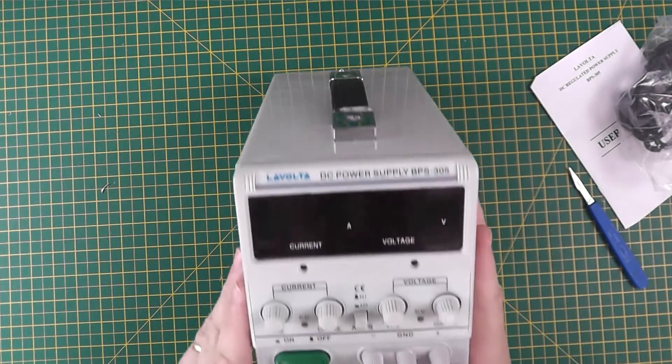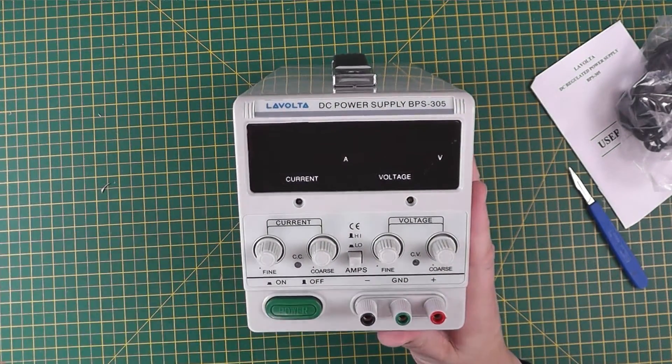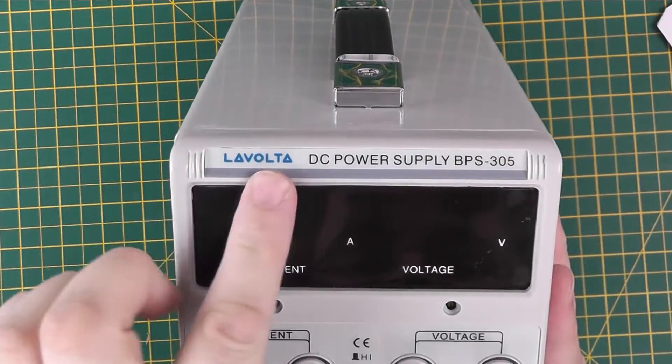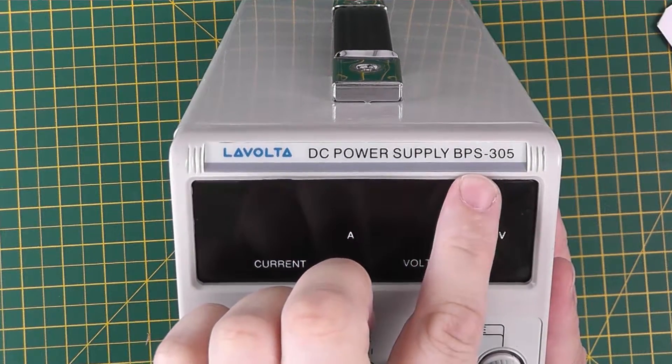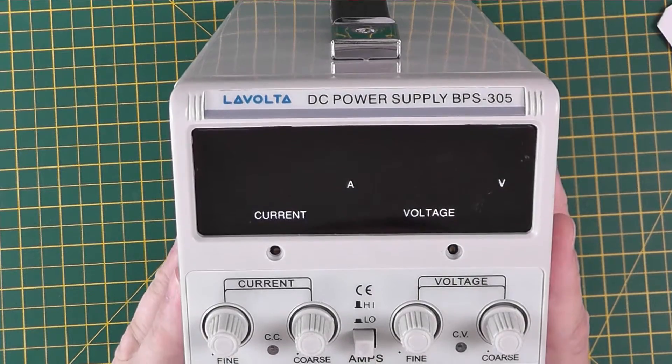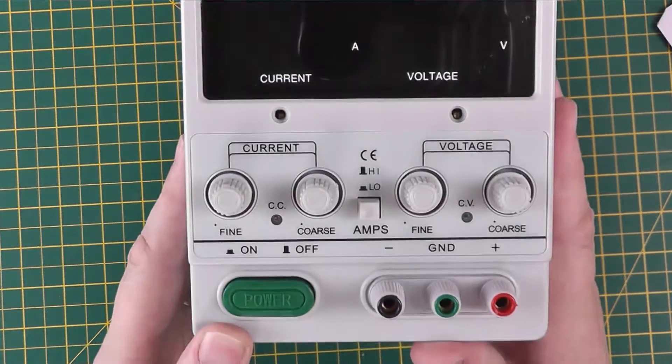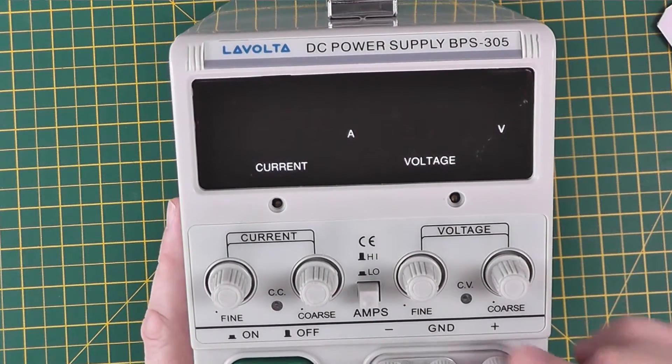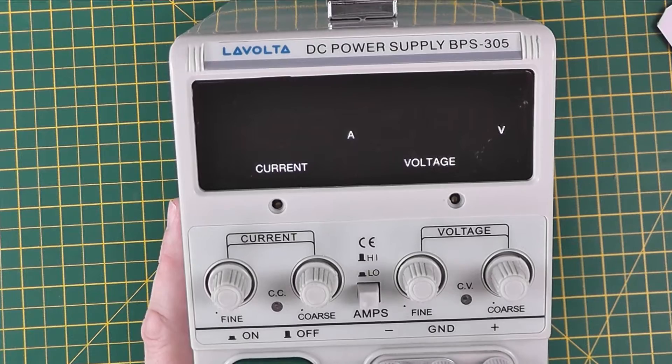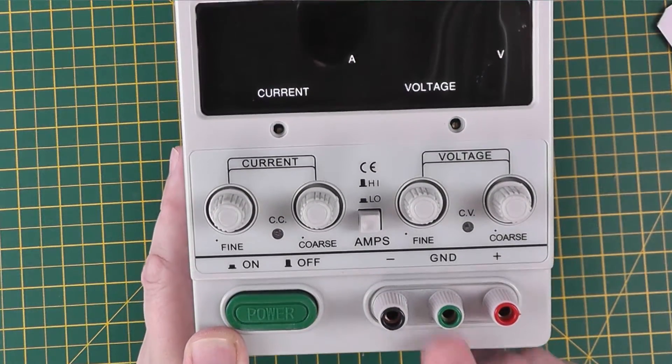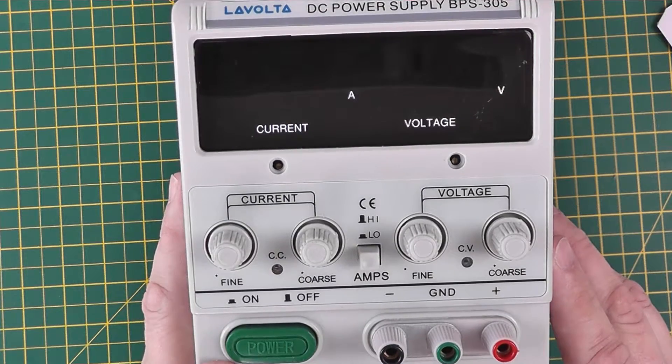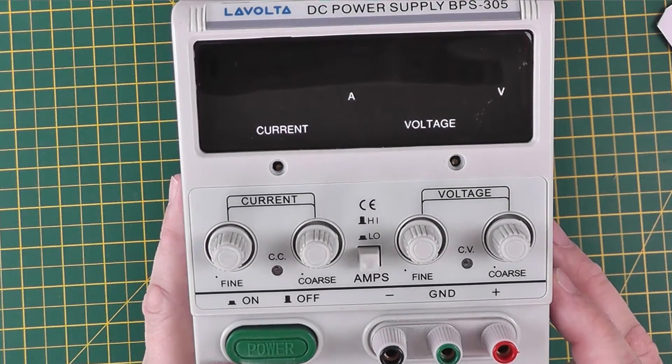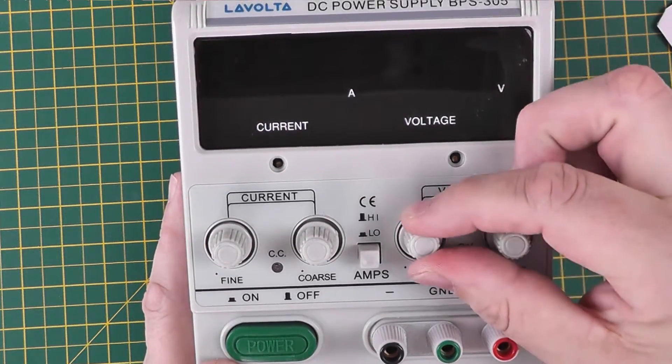Looking at the front, it's the Levolta DC power supply model number BPS-305. Nice simple clean interface, big green power button, one channel, negative plus and ground. On both current and voltage it's very simple, we have a coarse adjustment and a fine adjustment.